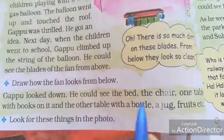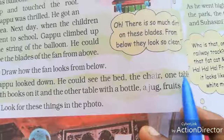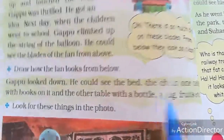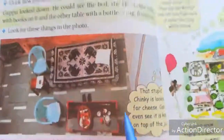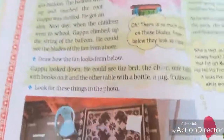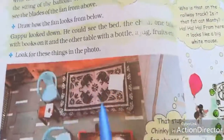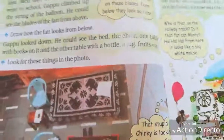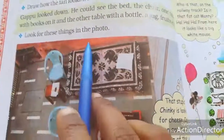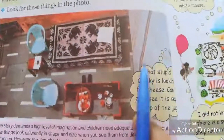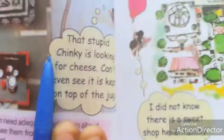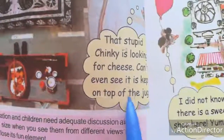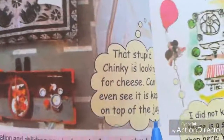Gappu looked down. He could see the bed, the chair, one table with books on it, and another table with a bottle, a jug, fruits, etc. Look for these things in the photo. Gappu said, 'The stupid chicken is looking for cheese. Can't even see it — it is kept on the top of the jug.'